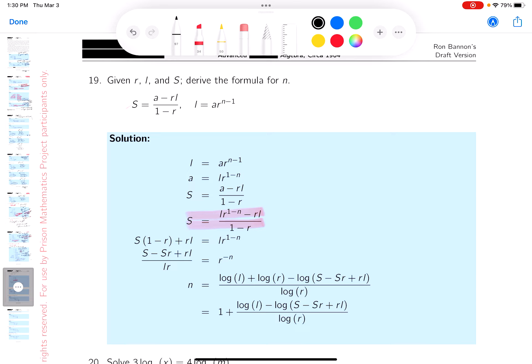So I'm going to take this thing over here. And it's what I would do on paper, by the way. I would write down, I don't know, S times (1 minus r) equals L times r to the (1 minus n) minus rl. I want to get that n. I'm almost there.